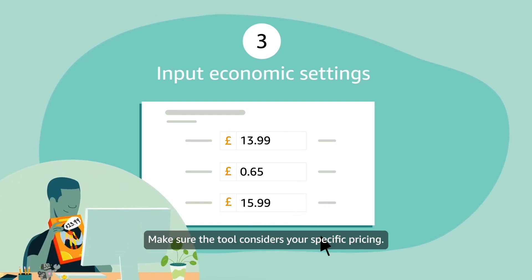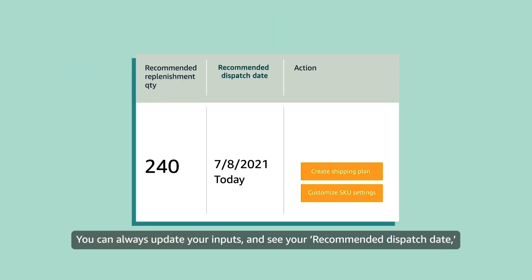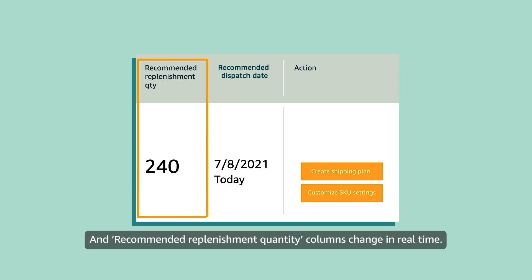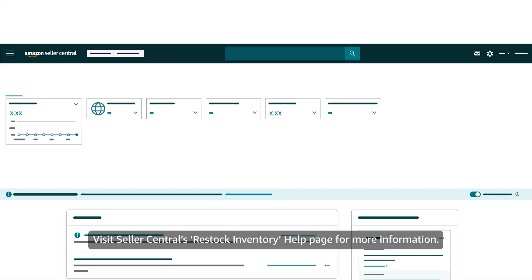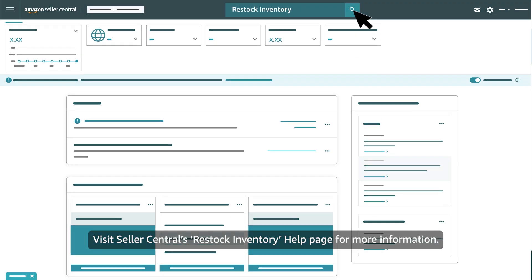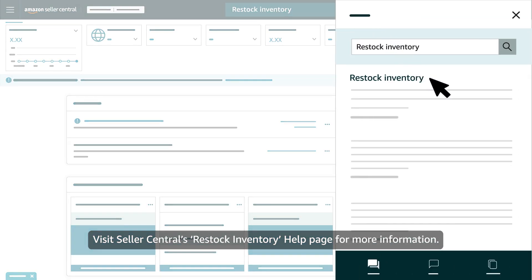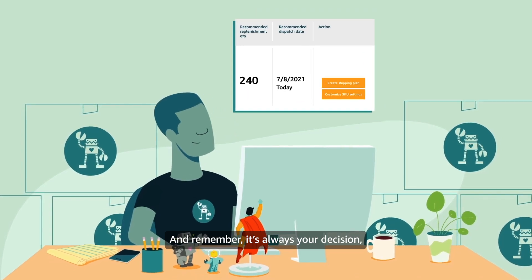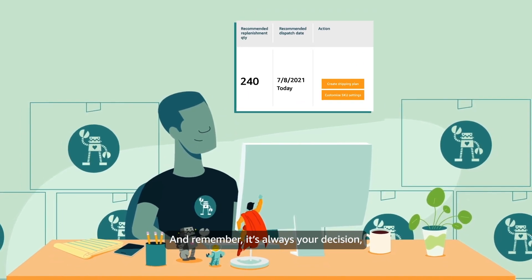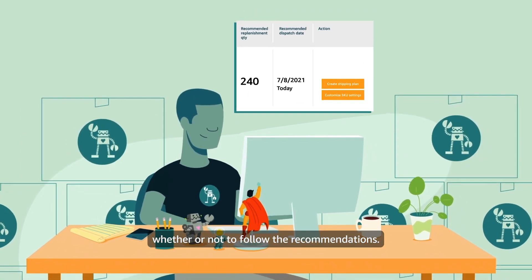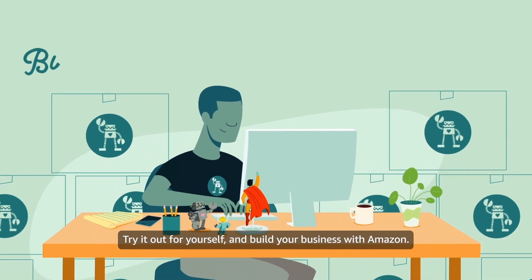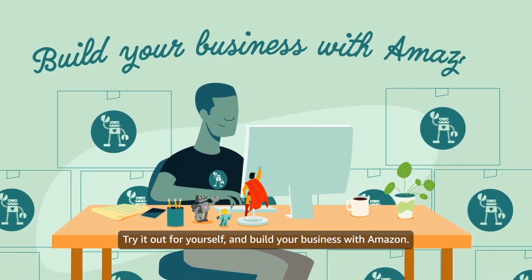Make sure the tool considers your specific pricing. You can always update your inputs and see your Recommended Dispatch Date and Recommended Replenishment Quantity columns change in real time. Visit Seller Central's Restock Inventory help page for more information, and remember, it's always your decision whether or not to follow the recommendations. Try it out for yourself and build your business with Amazon.